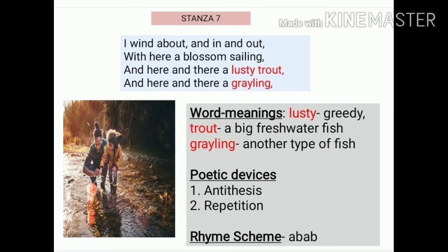Here 'wind about' means meandering — that is moving in a zig-zag pattern, not having the same pattern; it twists, turns, and flows in and out as well. 'With here a blossom sailing' — blossoms are flowers, and sailing means moving together. So when flowers fall into the brook, they both move together. 'And here and there a lusty trout' — lusty means greedy, and trout are a big freshwater fish — those greedy fishes enter the brook. And 'grayling' — these are another type of fish.